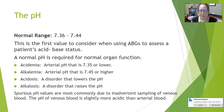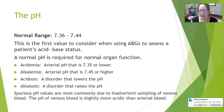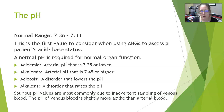Acidosis is simply a disorder that lowers the pH — for example, respiratory acidosis would present with acidemia, an arterial pH below 7.35. Alkalosis is a disorder that raises the pH. Spurious pH values are most commonly due to inadvertent sampling of venous blood; if ABG results don't match the clinical picture, venous contamination should be considered, since venous blood is slightly more acidic than arterial blood.